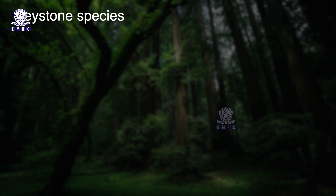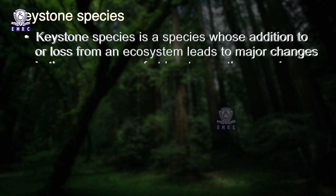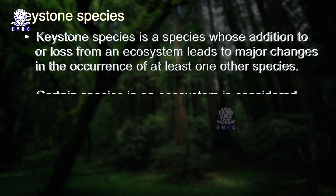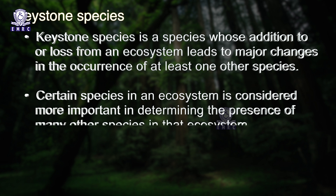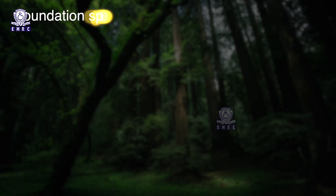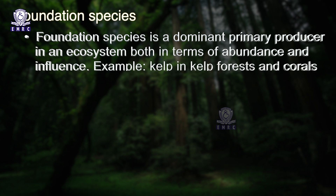Keystone species is a species whose addition to or loss from an ecosystem leads to major changes in the occurrence of at least one other species. Certain species in an ecosystem are considered more important in determining the presence of many other species. All top predators like lion, tiger, crocodile, and elephant are considered keystone species because they regulate all other animal populations indirectly. Foundation species is a dominant primary producer in an ecosystem both in terms of abundance and influence — for example, kelp in kelp forests and corals in coral reefs.